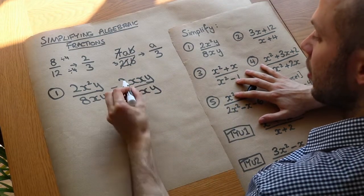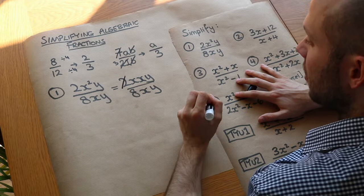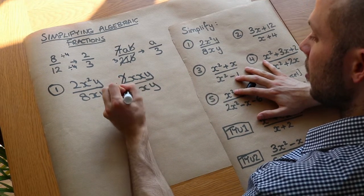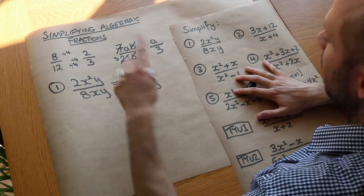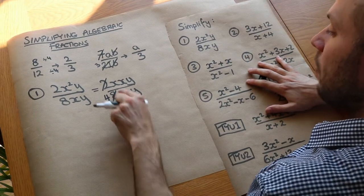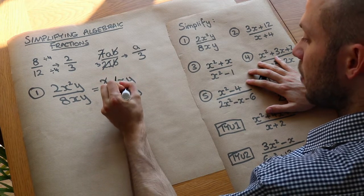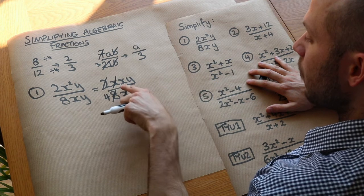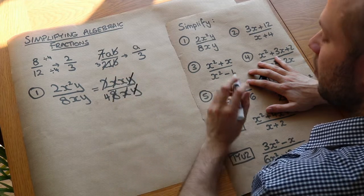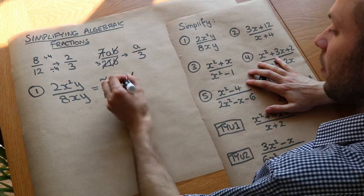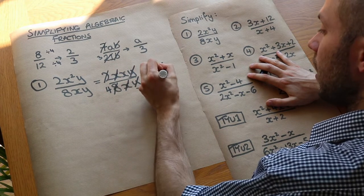Now let's always start with the numbers: the 2 and the 8 — what can we divide them both by? Well they both divide by 2, so we can cross that out; it just becomes 1, and 8 divided by 2 is 4, so we're left with a 4 at the bottom. What about the letters? Do we have an x common to the top and the bottom? Yes, so we can cross those out. We've still got that remaining x, and then that y — we can divide both top and bottom by y — and all we're left with at the top is just a single x and at the bottom just 4.